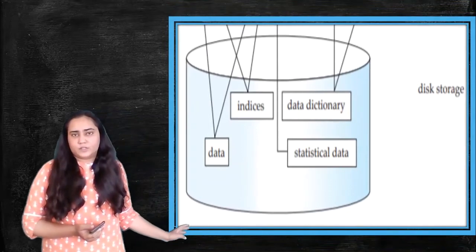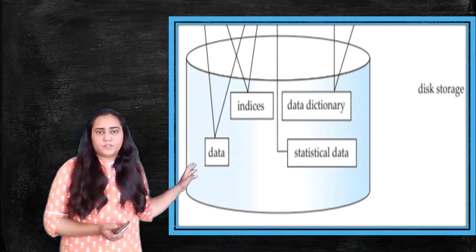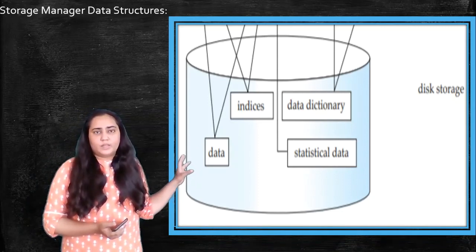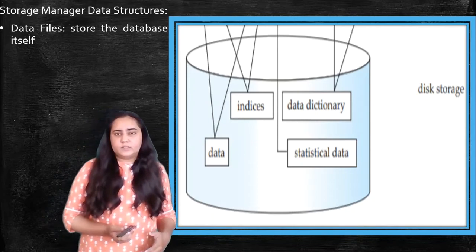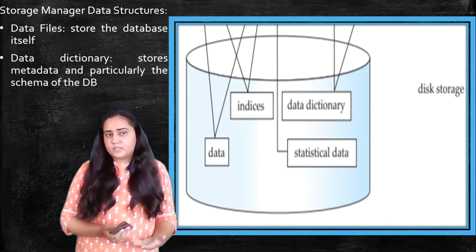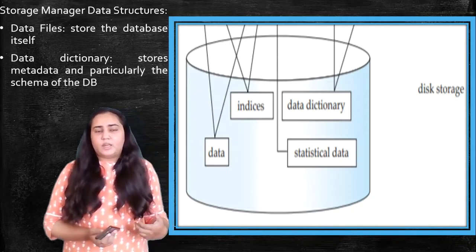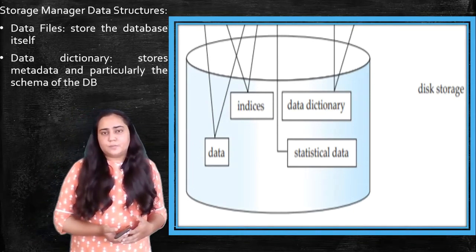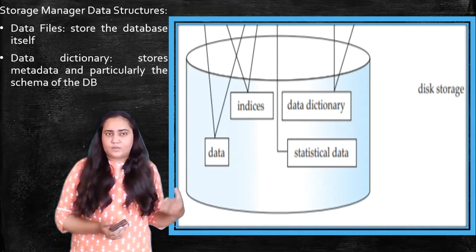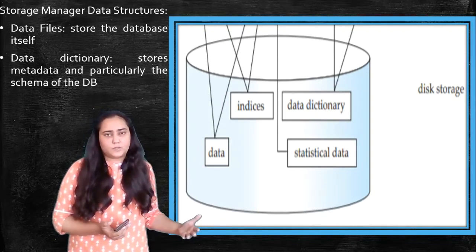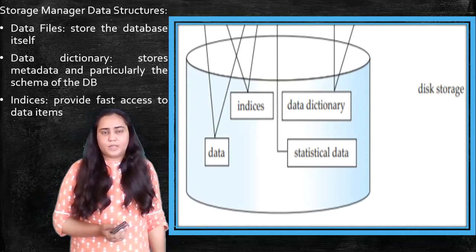So let's look at the disk storage. I've zoomed in on the disk storage. What you see here, they are all different types of data structures. They are also known as the storage manager data structures, where you can see there are data files. Data files actually contain the data which is present in the database. There's a data dictionary, which stores the metadata and particularly the schema of the database. It tells you which tables are there, which columns are there, which rows are there, what are the data types. I already explained what is a schema in my previous video. This is what is stored in the data dictionary.